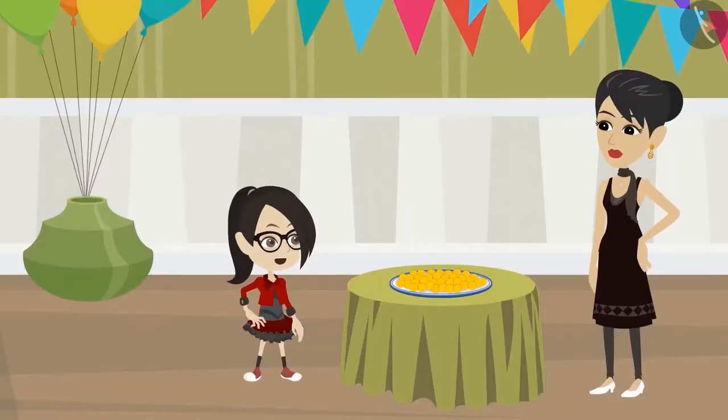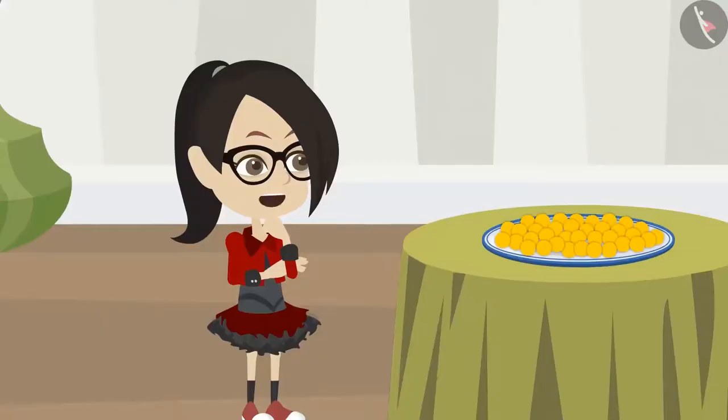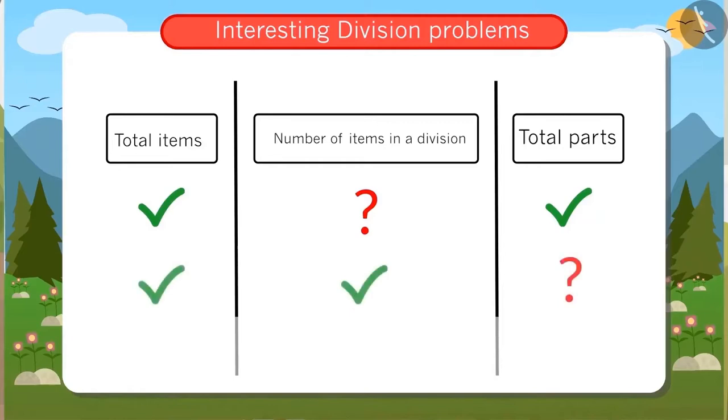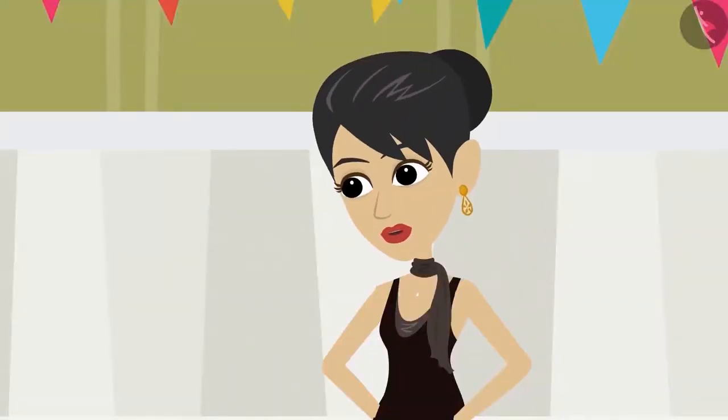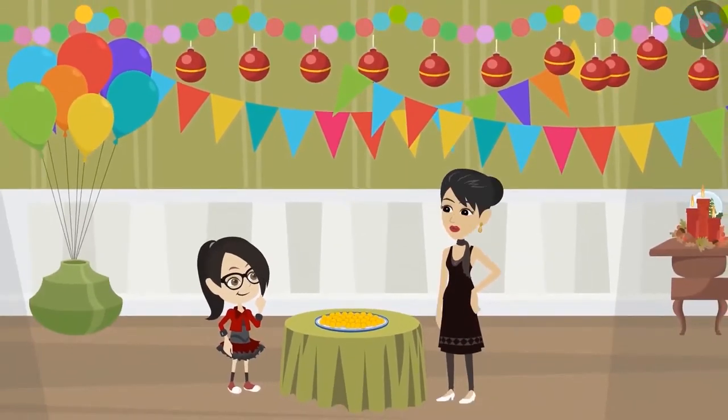Last time we learnt that when we are given the number of parts and have to find out the number of items in them, we use division. Today we learnt that when we know how many things will come in one part, we still use division. Yes, now go quickly. The laddus are to be packed before the guests arrive.